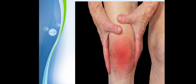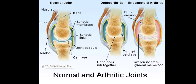Rheumatoid arthritis is usually characterized by inflammation in the joints, synovial proliferation, and in later stages, restricted movements of the joints. In this picture you can see the basic differences among a normal joint, osteoarthritis, and rheumatoid arthritis. The normal joint has intact cartilage, synovial fluid, and synovial membrane — everything is normal.